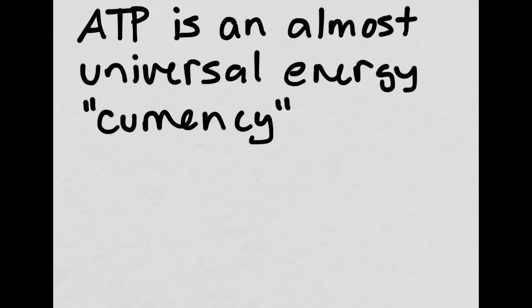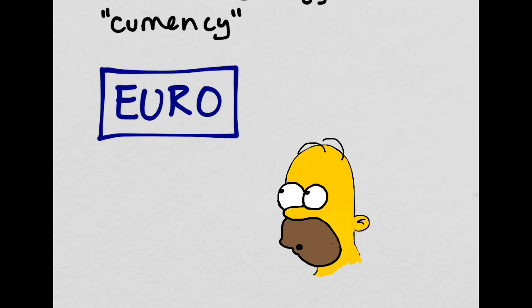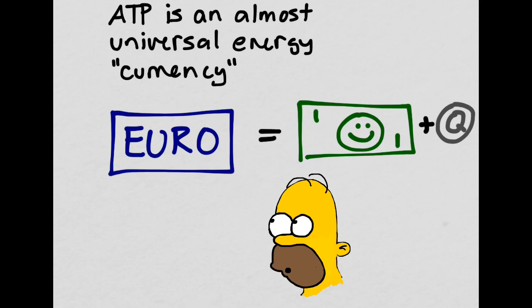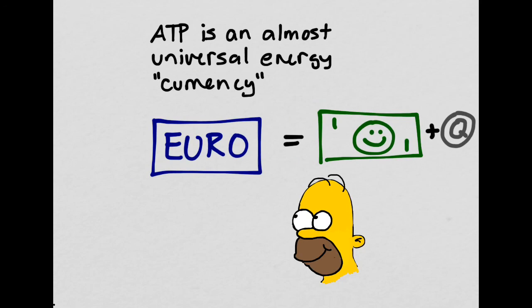ATP is an almost universal energy currency. You wouldn't be able to walk into any store in the United States and use a euro. However, you could take the euro to an exchange agency and convert it into about $1.25. It's still the same amount of money, it's just in a different form. Glucose is converted to ATP to make it easier for the cells to use it, just like we converted the euro into a dollar.